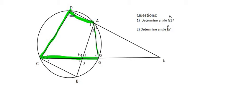And so we know that the opposite angles of a cyclic quadrilateral, so D and G1, for example, they add up to 180,